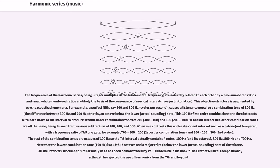When one contrasts this with a dissonant interval such as a tritone, not tempered, with a frequency ratio of seven to five, one gets, for example, 700 to 500 equals 200 first-order combination tone, and 500 to 200 equals 300 second-order. The rest of the combination tones are octaves of 100 hertz, so the seven-to-five interval actually contains four notes: 100 hertz and its octaves, 300 hertz, 500 hertz, and 700 hertz. Note that the lowest combination tone, 100 hertz, is a 17th, two octaves and a major third, below the lower actual sounding note of the tritone.